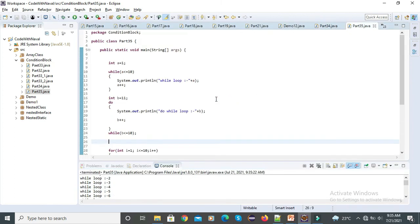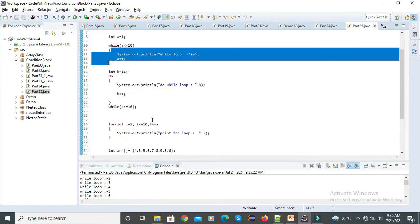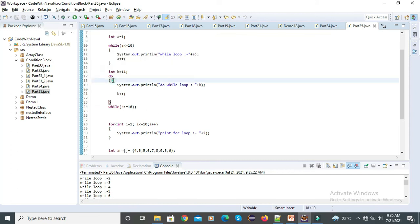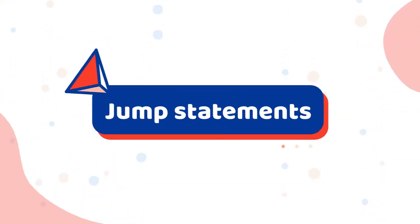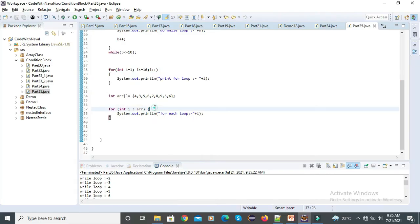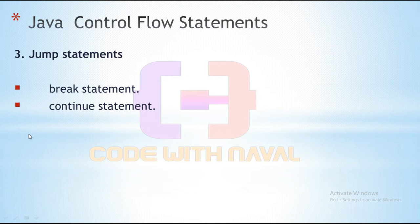Here we saw: while loop, do-while loop, for loop, and for-each loop. Then we have jump statements. In jump statements, we have the break statement and the continue statement. The break statement is a loop control statement used to terminate the loop. As soon as the break statement is encountered from within a loop, the loop iteration stops there and control goes to the first line after the loop.